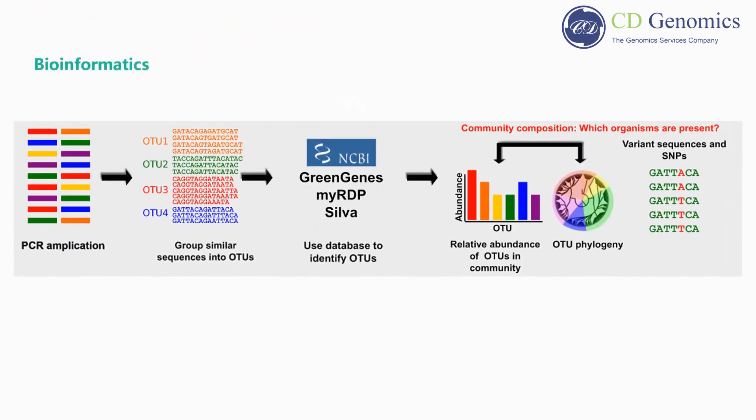After high-throughput sequencing, filtered and trimmed sequences of high quality are then clustered into operational taxonomic units, commonly based on 97% identity of the reads. Species annotation, OTU phylogeny, diversity analysis, and other studies can be performed after OTU determination by OTU analysis.